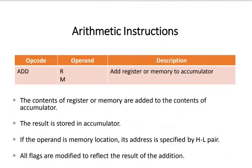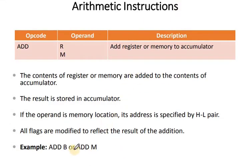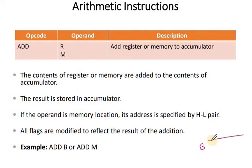Here is our arithmetic instruction. The opcode is ADD followed by the register or memory operand. For example, ADD B — register B is 8 bits, say it contains 00011000. The ADD instruction adds the contents of the specified register to the accumulator.